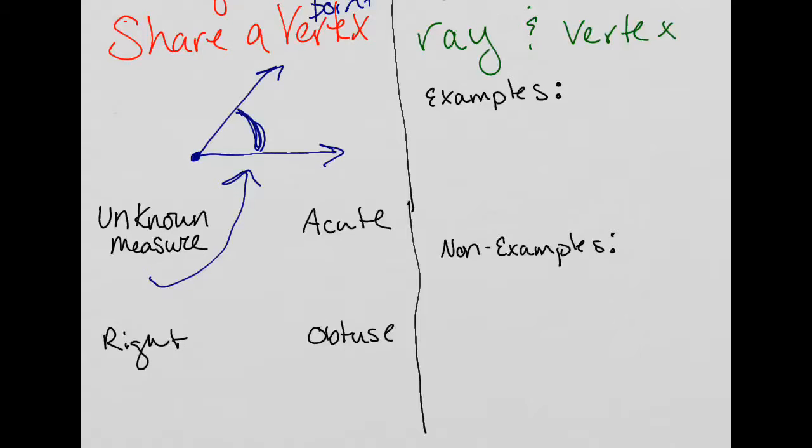An acute angle is an angle that measures less than 90 degrees. Here's a picture of an example. Shared vertex, two rays, the space in between is measured 30 degrees. That would be acute.